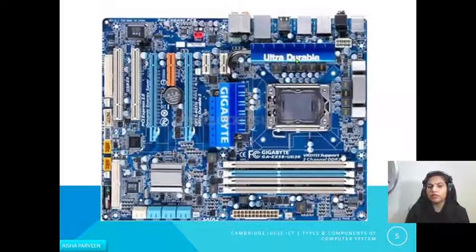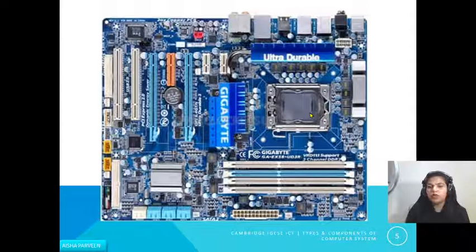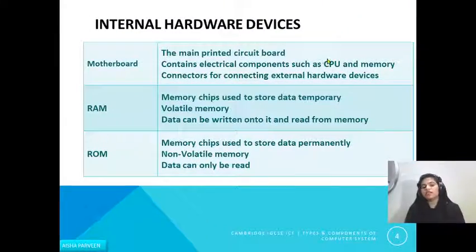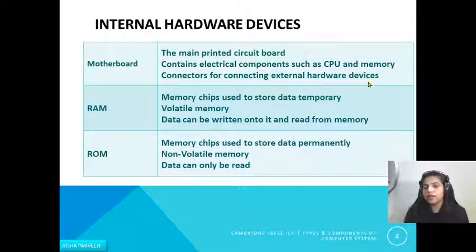This is the picture of the motherboard — an internal hardware device inside your computer system. Here you can find different slots for RAM, sound card, memory, and a place for the CPU. Ports are also available to connect external hardware devices. The motherboard is the main printed circuit board of your computer system; it contains electrical components such as the CPU and memory, and connectors for external hardware devices.